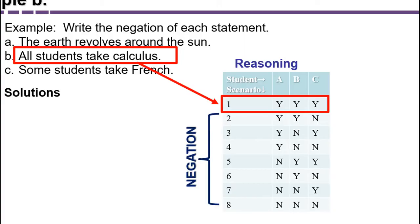The negation has to take into account all the other scenarios. What do they have in common? In each of those scenarios, there's at least one student who is not taking calculus.